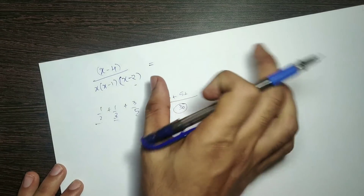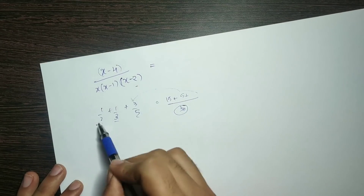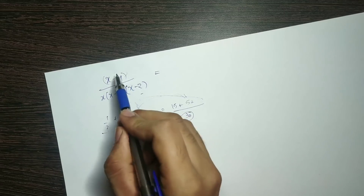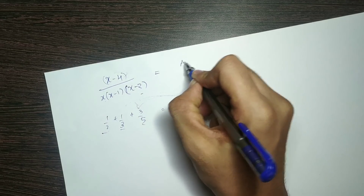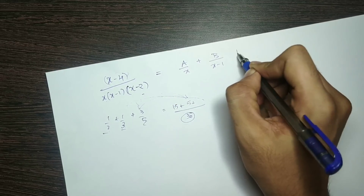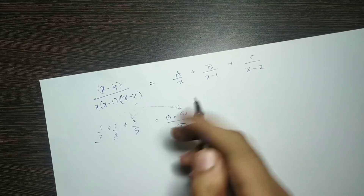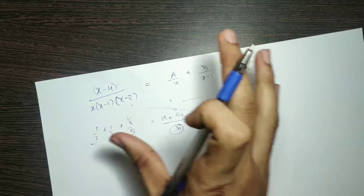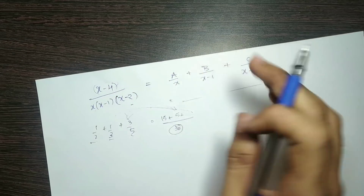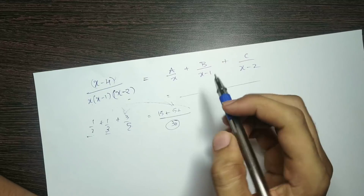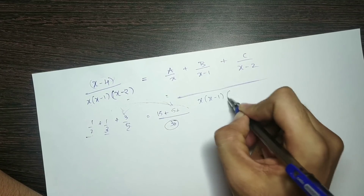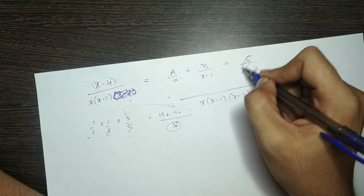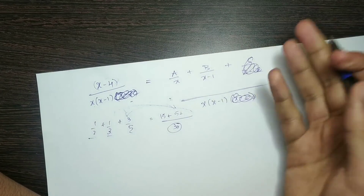What we do is multiply by the fractions. We split the denominator. So the assumption is: A/x plus B/(x minus 1) plus C/(x minus 2). This is our assumption. In the same way, we take the LCM as x into (x minus 1) into (x minus 2) and proceed with finding the A, B, C values.